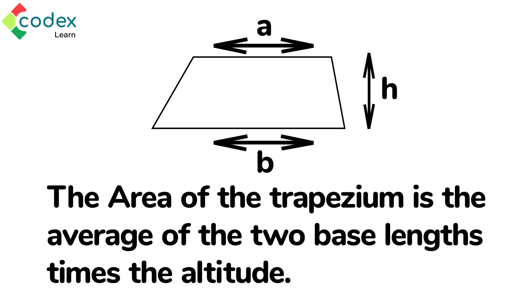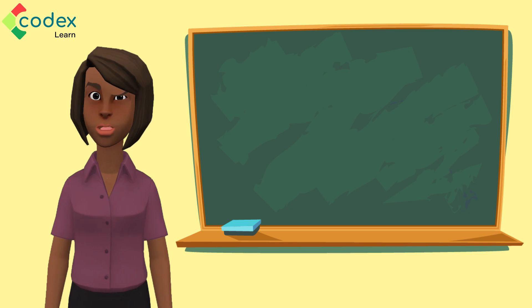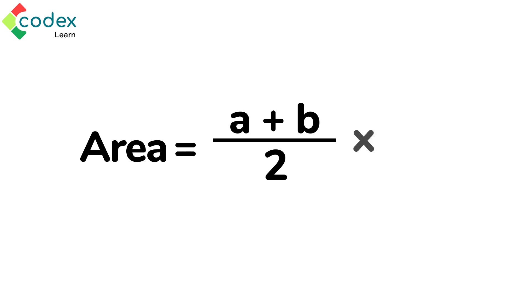The area of the trapezium is the average of the two base lengths times the altitude. To find the area of a trapezium, you should express the mathematical formula as: Area equals a plus b divided by two, all multiplied by h.